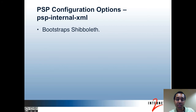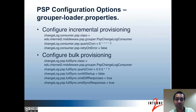The PSP internal.xml file bootstraps Shibboleth, and it's even more unlikely that you would need to modify this file. The last configuration file is the grouperloader.properties file. This file isn't specific to the PSP — it's used by all the daemon processes in Grouper. Here you can configure incremental and bulk provisioning using the Grouper daemon. In both cases, you can set the schedule for when you want each of these jobs to run based on a Quartz cron syntax.